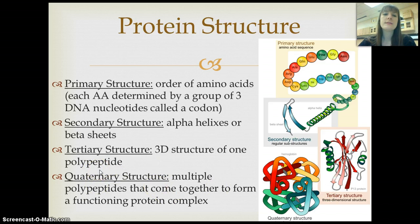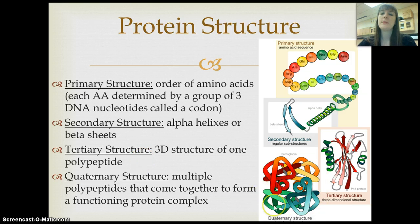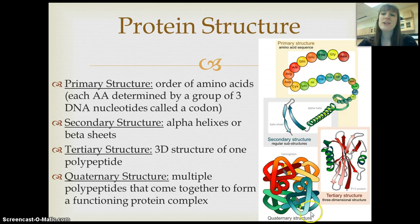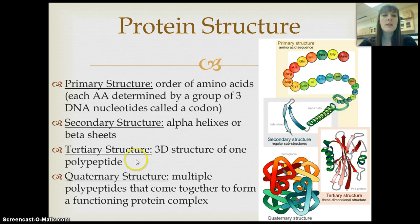Some proteins have a quaternary structure, where multiple groups of proteins are put together. This is an image of hemoglobin, the protein that carries oxygen in your blood. There are four different colors in this image because each color represents a whole different polypeptide — they have to interact with each other before hemoglobin can do its job. All of these — primary, secondary, tertiary, quaternary structure — are determined by chemistry. Life is chemistry because chemistry allows these things to fold into the shapes they need to do their job.